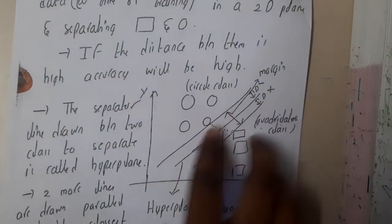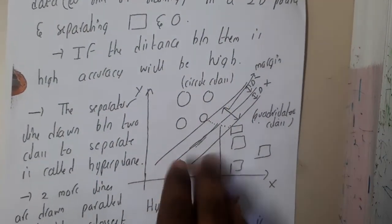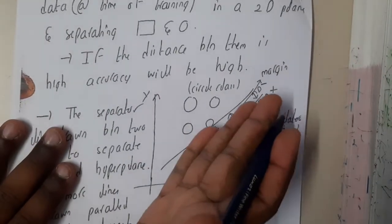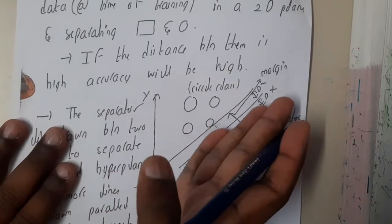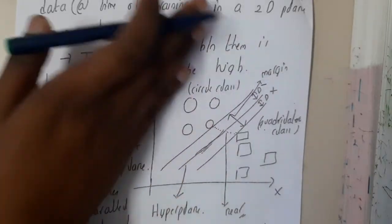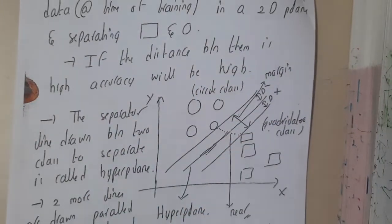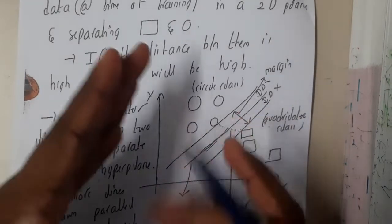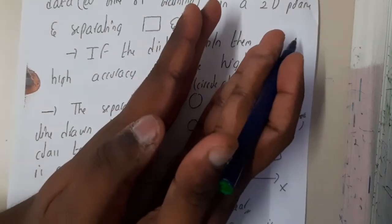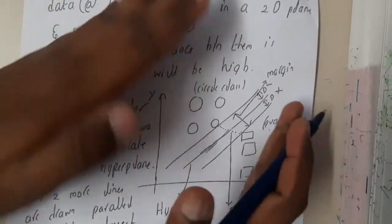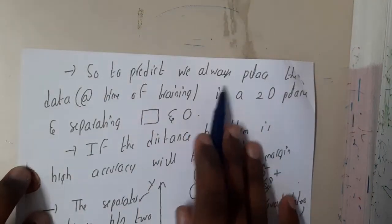Basically, whenever a particular shape is coming, it will assume a line in between, and based on its differences between those two shapes, it will be pushing one on to the other side and the other on to the other side. If you observe here, all the circles are one side and all the squares are on one side. So here, how far are they? If they are this much closer, they are not that much accurate, whereas if they are this much far, they are more accurate. So as the distance increases, the accuracy also increases.